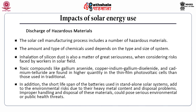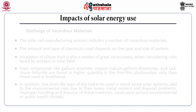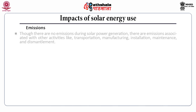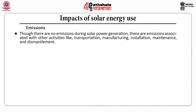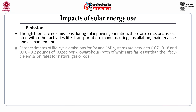Improper handling and disposal of hazardous materials could pose serious environmental or public health threats. Though there are no emissions during solar power generation, there are emissions associated with transportation, manufacturing, installation, maintenance and dismantlement. The estimates of life cycle emissions for photovoltaic cells and concentrated solar power systems are between 0.07 to 0.18 and 0.08 to 0.2 pounds of carbon dioxide equivalent per kilowatt hour, which are far lesser than life cycle emission rates from natural gas or coal.